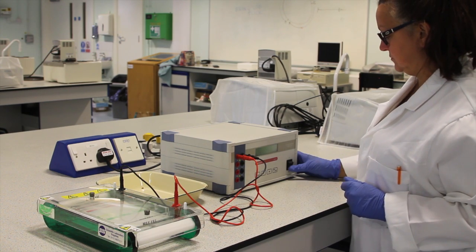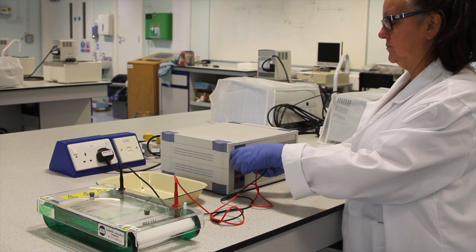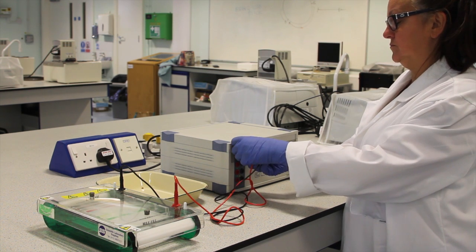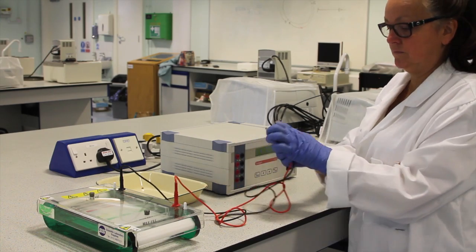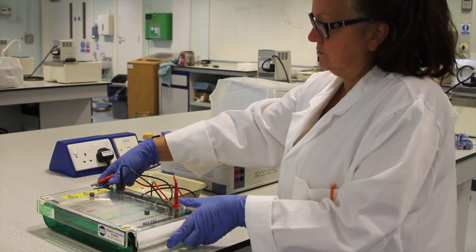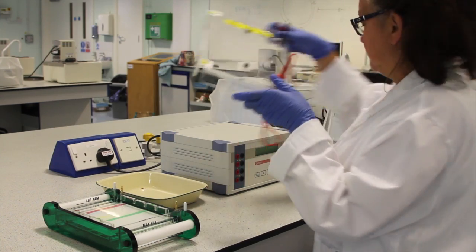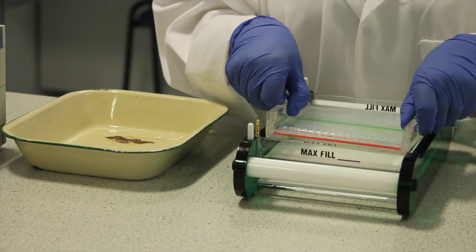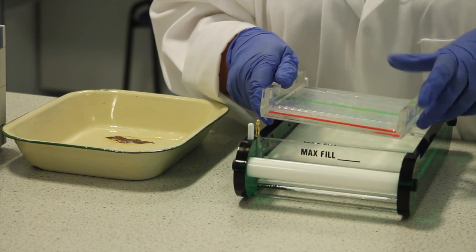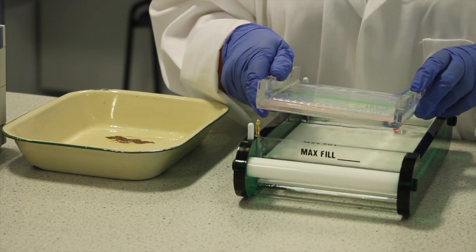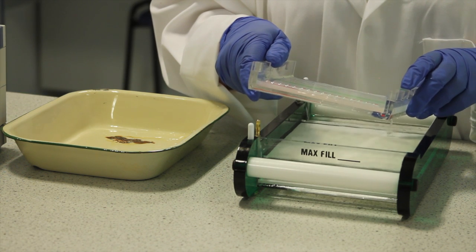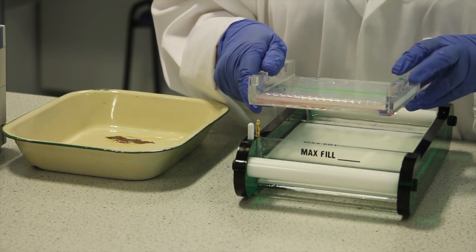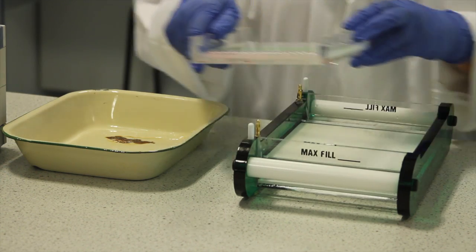Once the gel has run, turn off the power supply. Remove the leads and carefully remove the lid from the gel tank and place it on the bench. You should now remove the gel, tipping it slightly to drain the excess buffer, whilst ensuring you do not allow it to slide off its casting stand, and then place it in a suitable container.